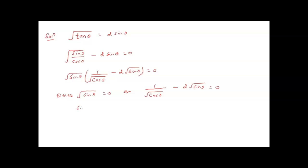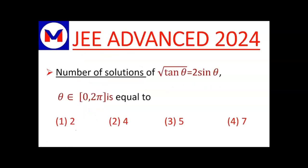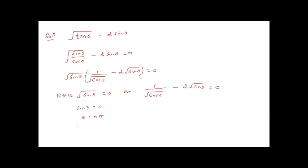Either √(sin θ) = 0, which gives sin θ = 0, so θ = nπ. Finding solutions in [0, 2π]: at n = 0, θ = 0; at n = 1, θ = π; at n = 2, θ = 2π. So from this case we get three solutions: 0, π, and 2π.